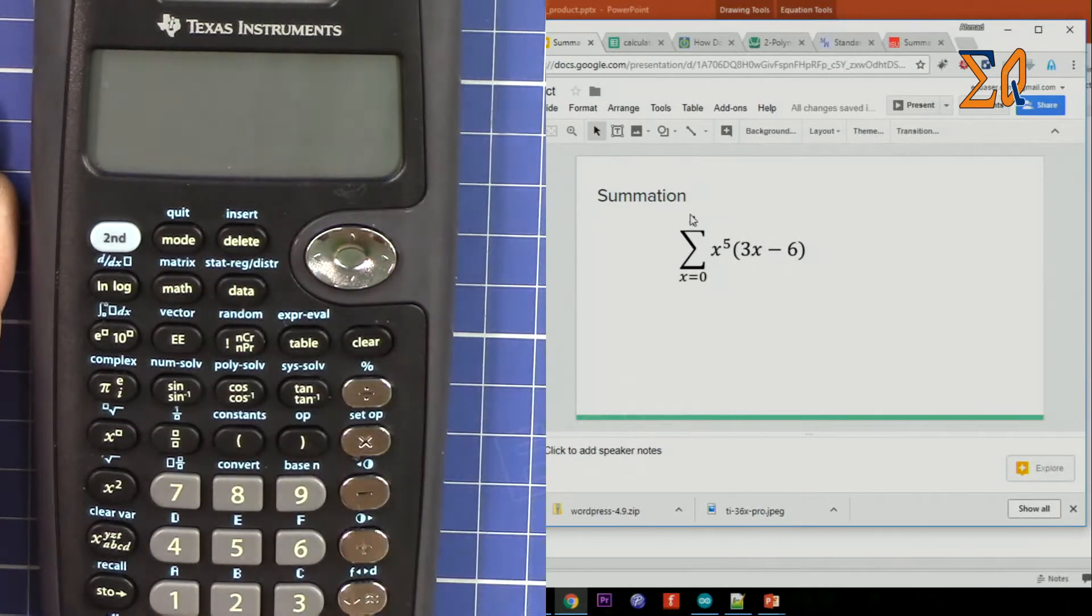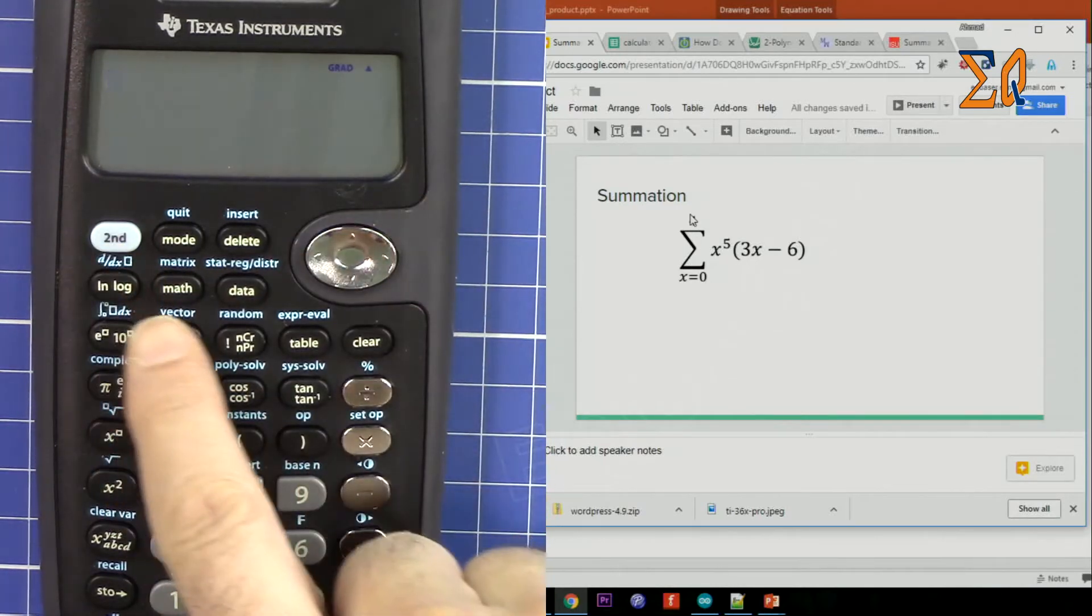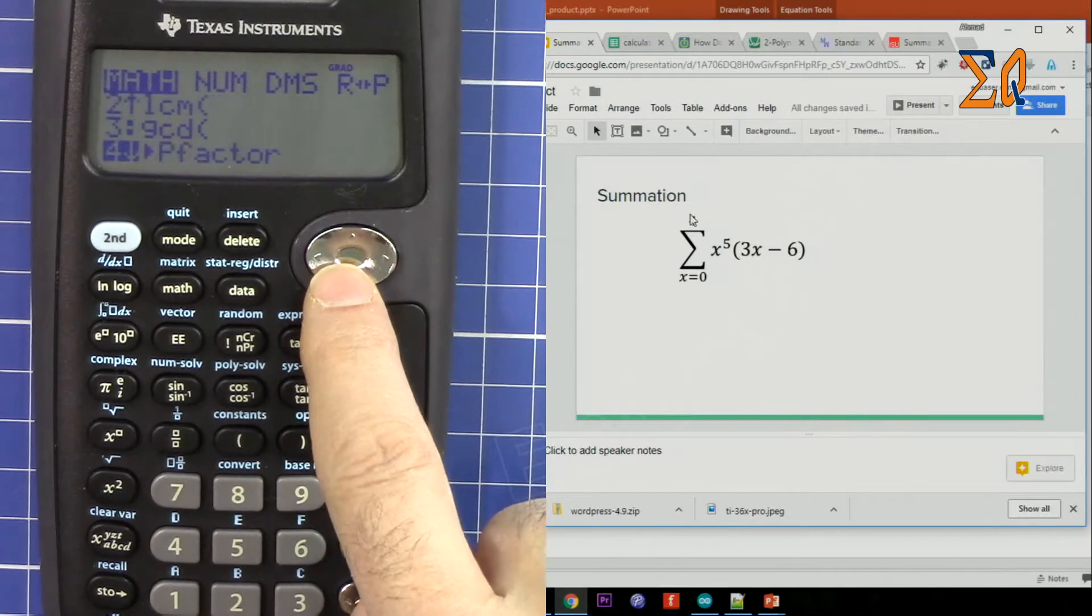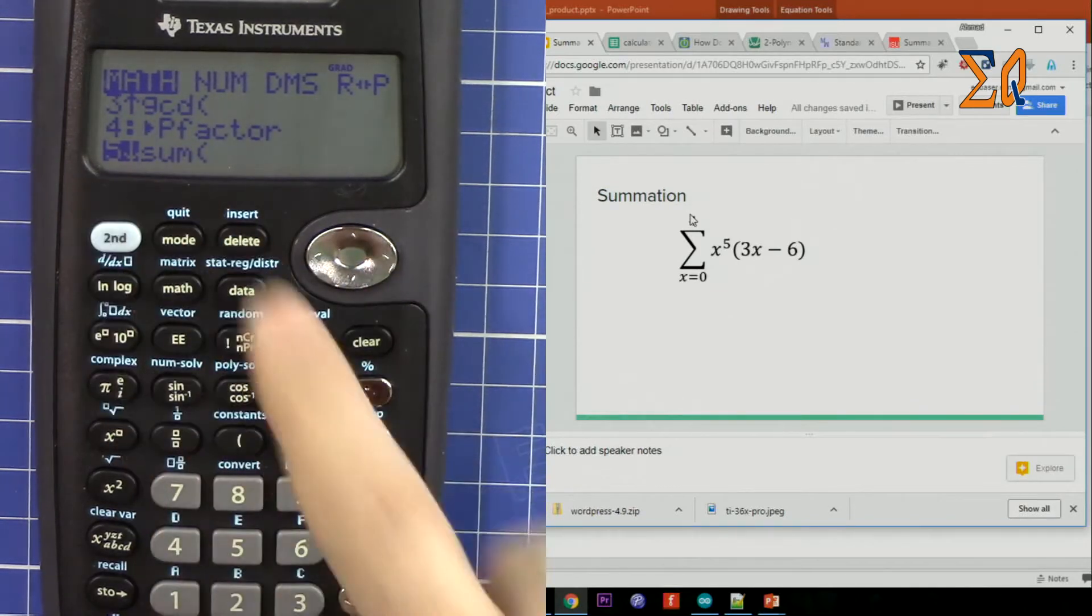Let me turn it on. Now press Math and then scroll down until you see sum, number 5. Press 5.